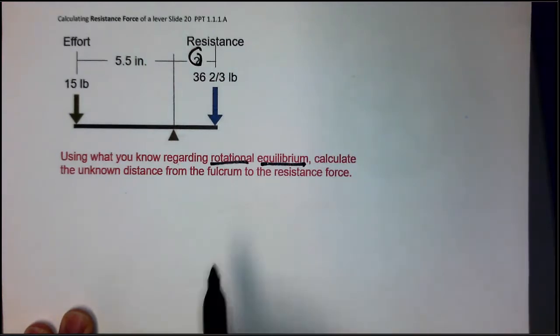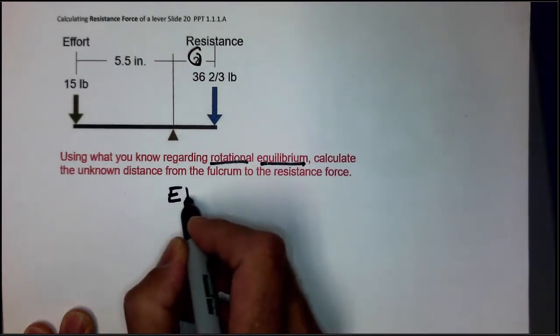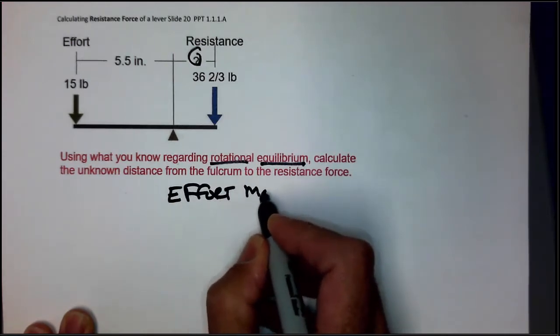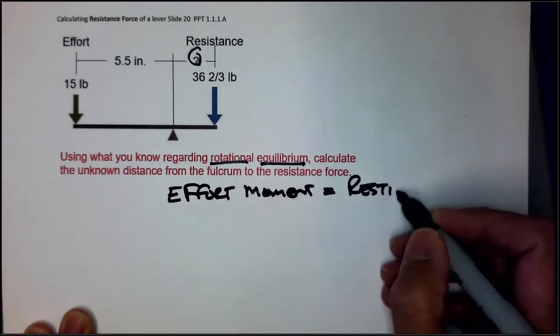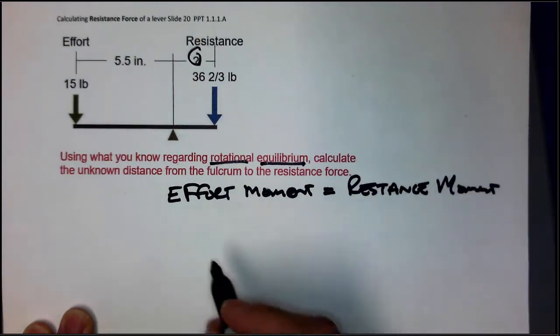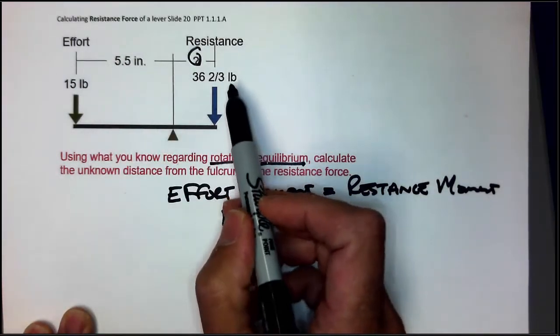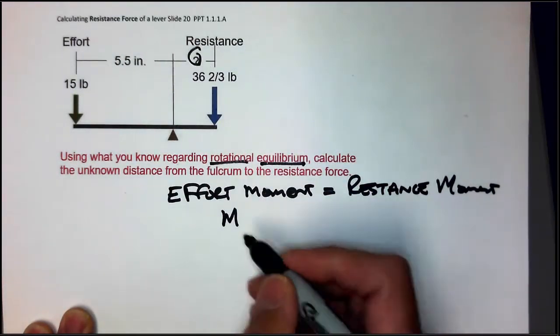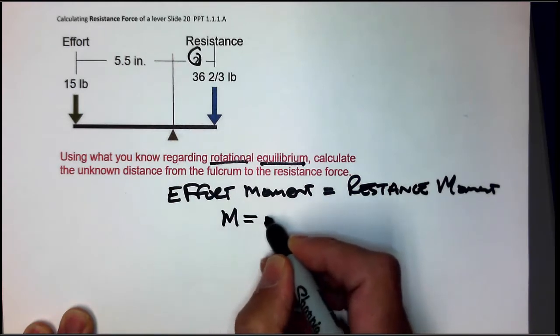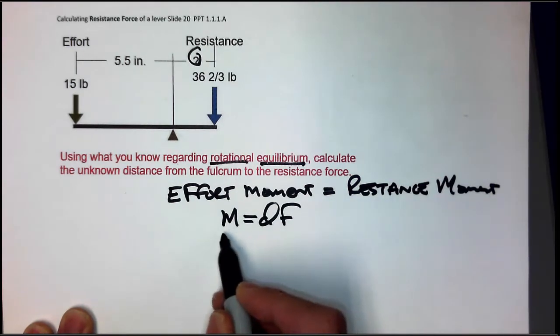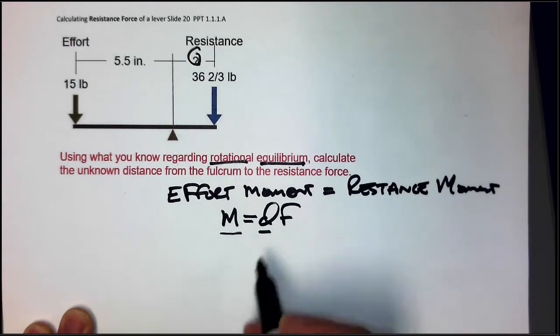Because what that means is that the effort moment must equal the resistance moment. So what that says is this side of the equation is equal to this side. And that's easy because we know from before that M equals DF. The moment is equal to the distance times the force.